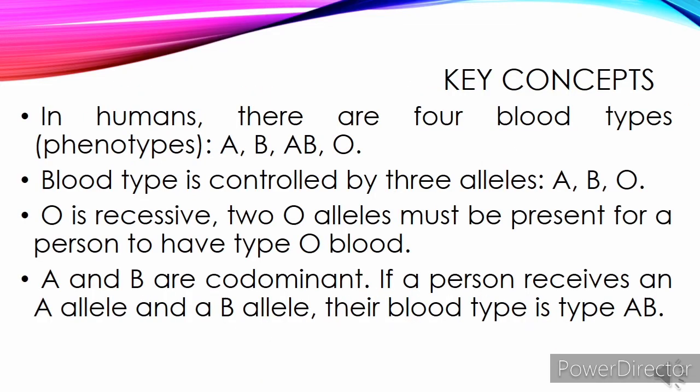Key concepts: In humans, there are four blood types — A, B, AB, and O. Blood type is controlled by three alleles: A, B, and O. O is recessive; two O alleles must be present for a person to have type O blood. A and B are co-dominant. If a person receives an A allele and a B allele, their blood type is type AB.